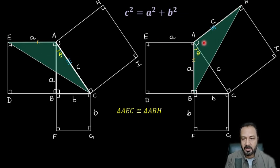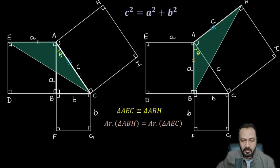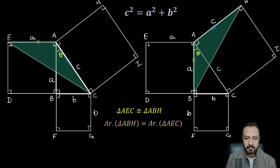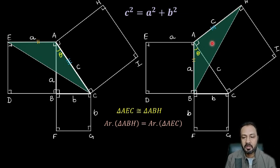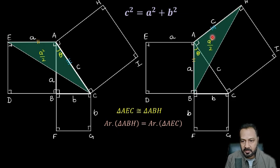We have two triangles with equal adjacent side lengths and equal included angles, so triangle ACE and triangle ABH are congruent triangles by SAS. Since they are congruent, their areas must be equal. The area of a triangle is base times altitude divided by 2. For triangle ACE, the base is a and the altitude is also a, so the area is a²/2. Therefore the area of triangle ABH is also a²/2.